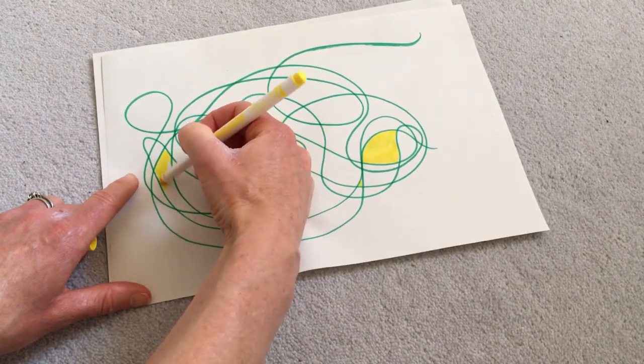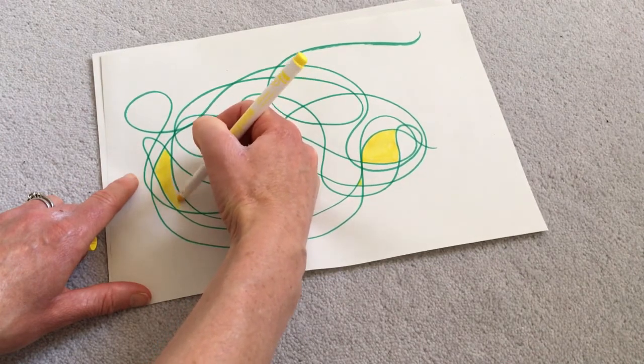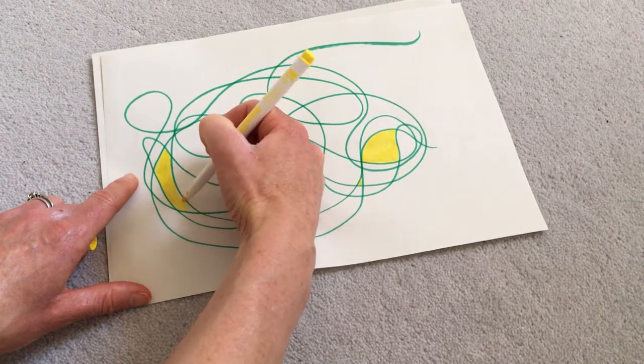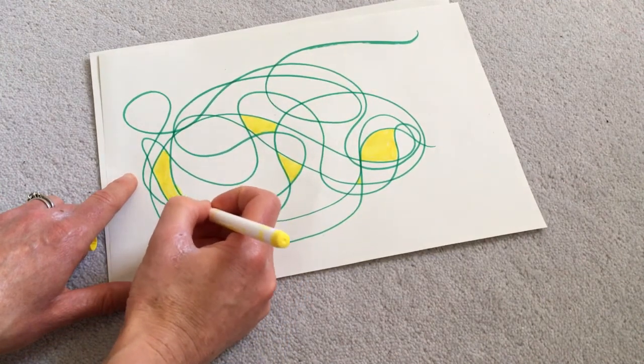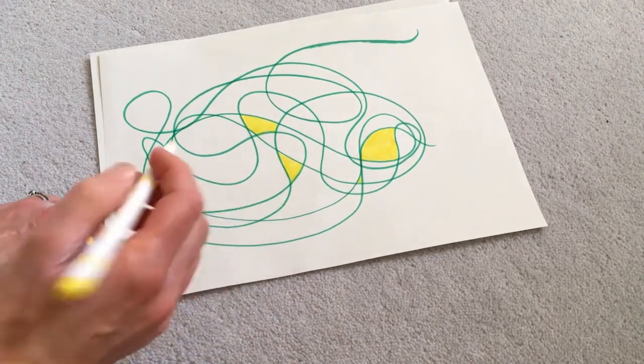There we go. So you get the idea. I'm going to choose another colour after this one. There we go. Carefully, Mrs Baldwin. Oops, I went over the line there.